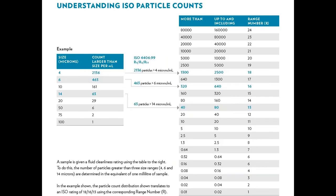Some of you may have seen these ISO particle count charts before. If you read your sample reports, you'll probably see these numbers. I'm not going to go too far into it, but it's the R4, R6, R14 codes. As you can see in this example, this would be an R18/R16/R13 — basically what we call an 18/16/13. That's because four micron and greater encompasses all the particles that are four micron and greater, six and up, and then 14 and up. So you can see how that trends. The R4 is going to be the largest number because it's taking in all the particles.